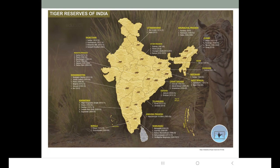Uttar Pradesh also has tiger reserves: Dudhwa, which is very famous, Pilibhit, Amangarh, and Ranipur. In Uttarakhand there is Jim Corbett, which is also very famous, and Rajaji. In the southern part of the country, Kerala has two tiger reserves: Periyar and Parambikulam. In Tamil Nadu there are around five tiger reserves: Mudumalai, Anamalai, Kalakad-Mundanthurai, Satyamangalam, Srivilliputhur, and Megamalai.